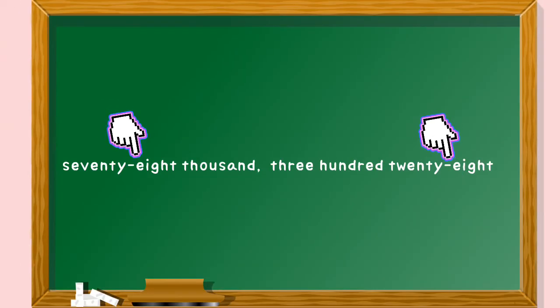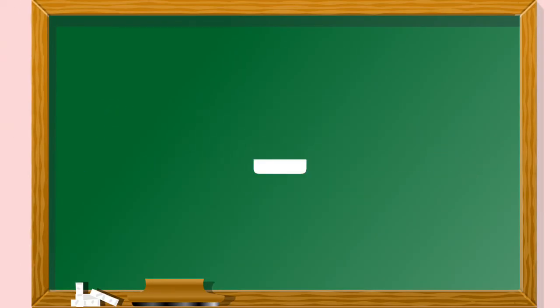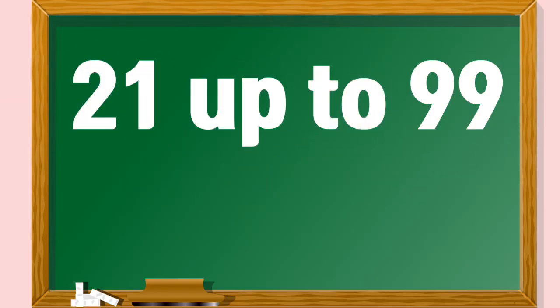These are hyphens. Always hyphenate numbers 21 up to 99 when writing them out in words. These are compound numbers.